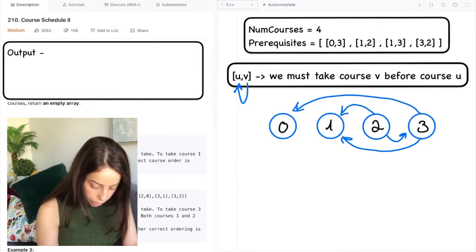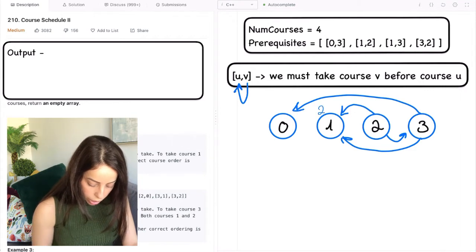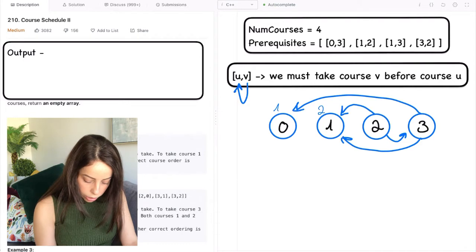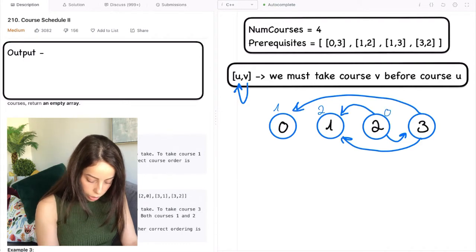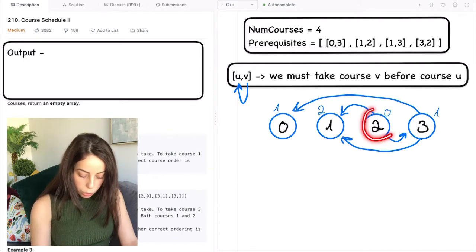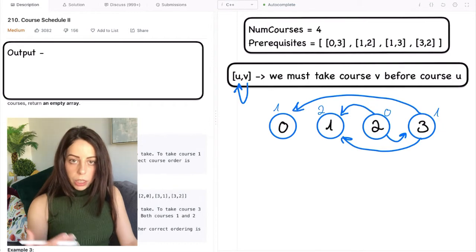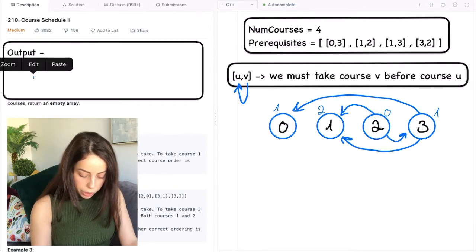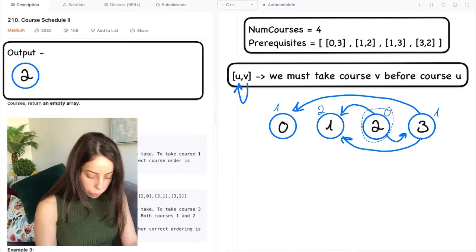Same goes for the other nodes. So let me just write the in degree of each node. So this one has two incoming edges. This one has one. This one has zero. And this one has one. Of course zero has a zero in degree meaning no prerequisites. So we can just take it now. We can add it to our schedule and remove it from the graph.